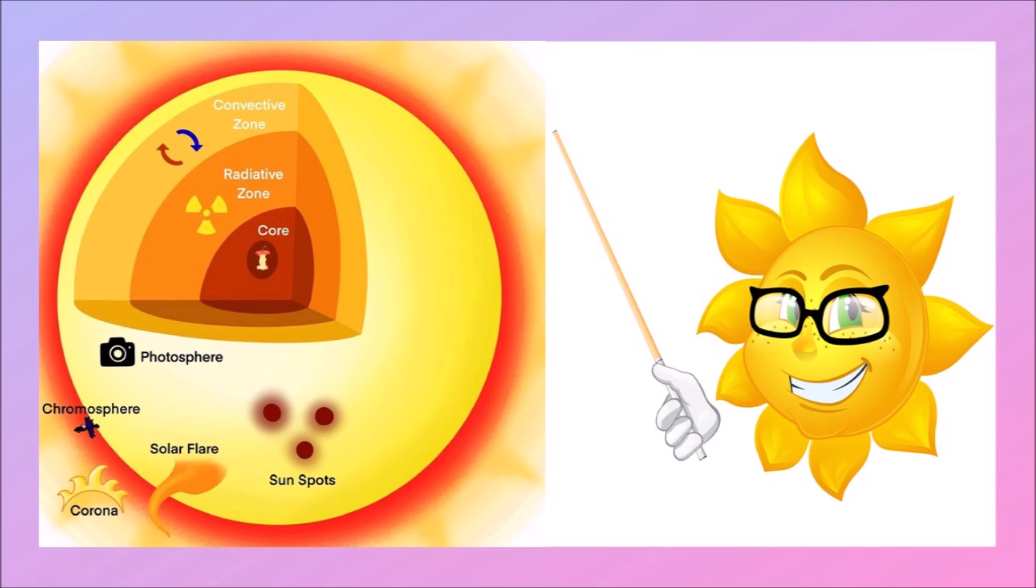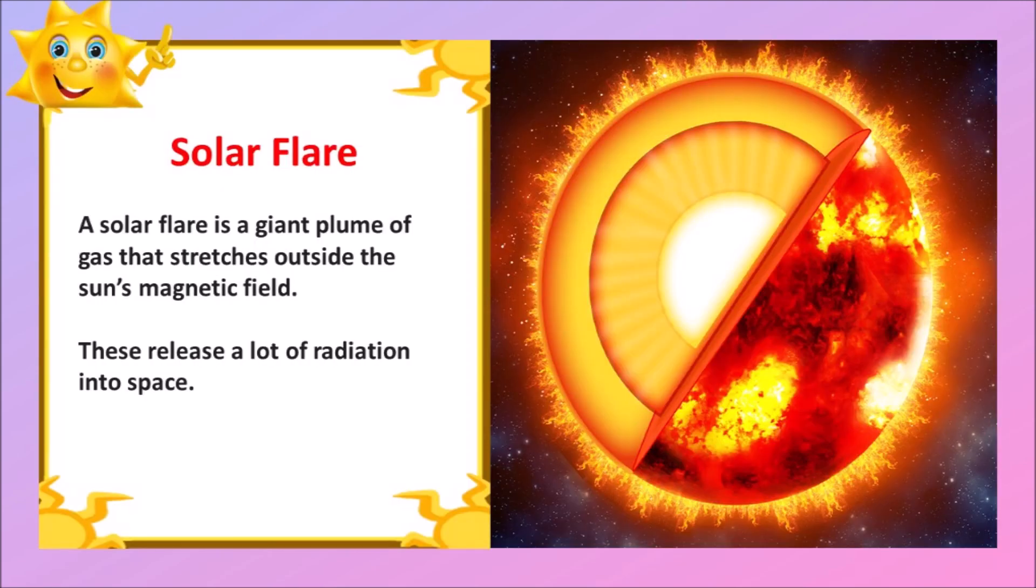The next and the last outermost layer is the solar flare. A solar flare is a giant plume of gas that stretches outside the Sun's magnetic field. These release a lot of radiation into space. This is called solar flare.